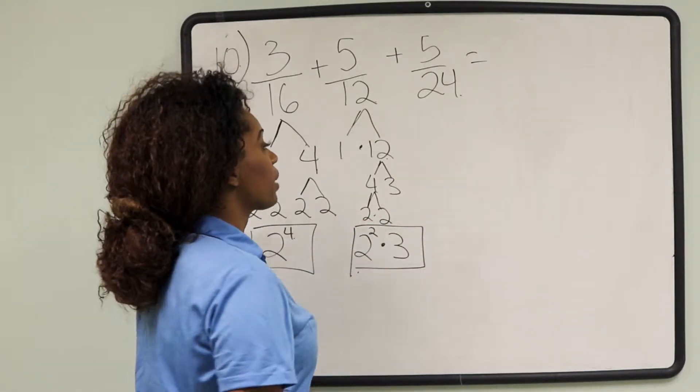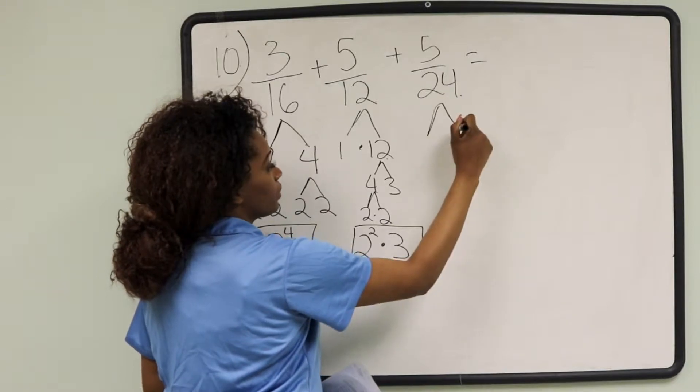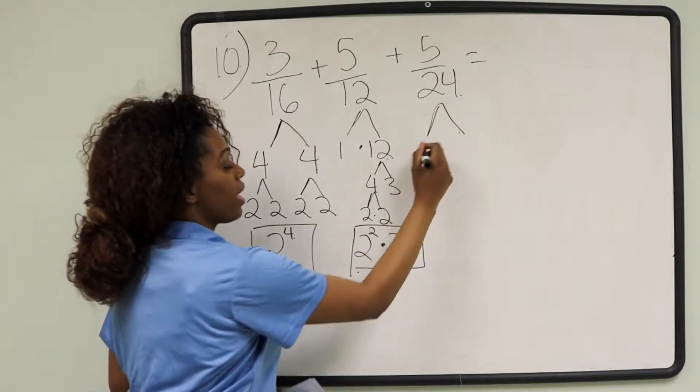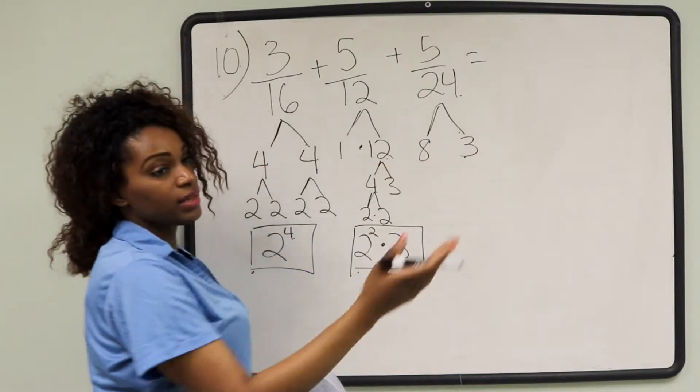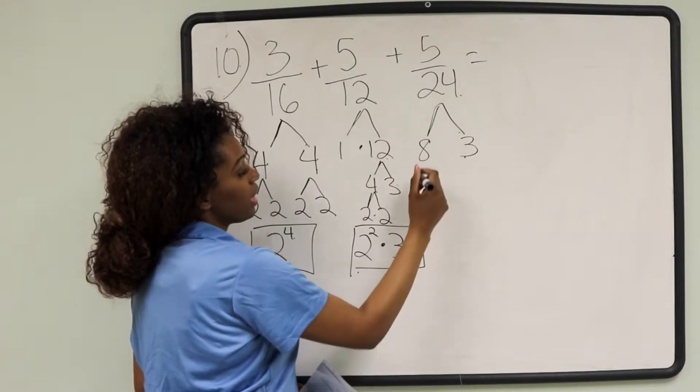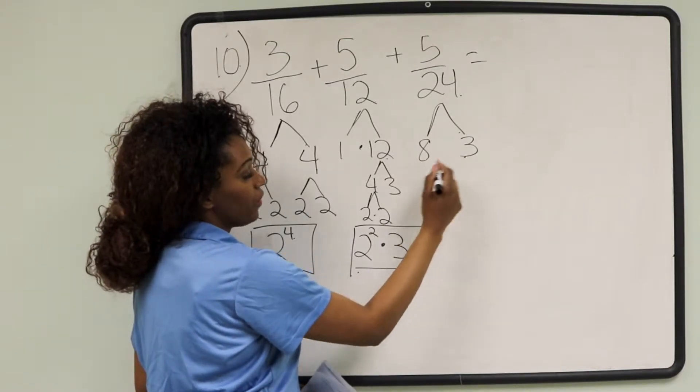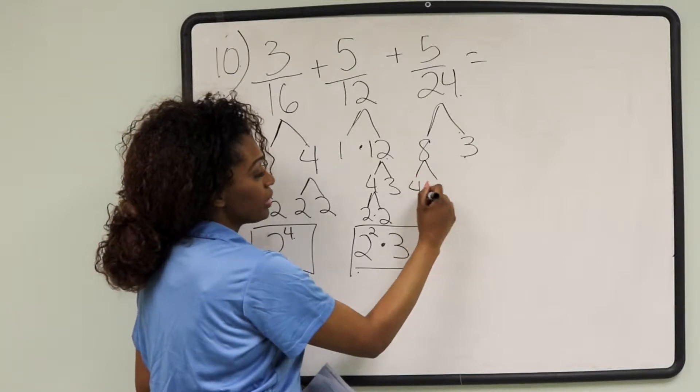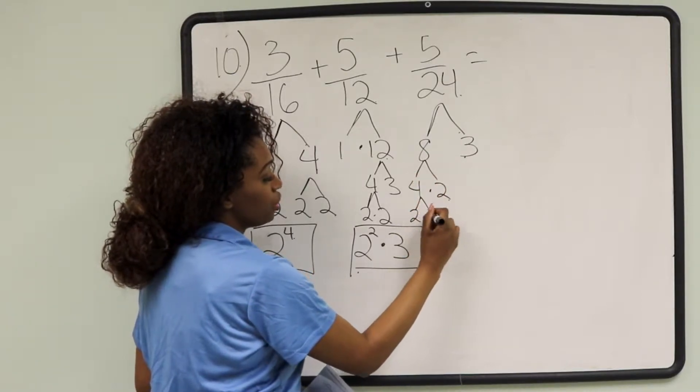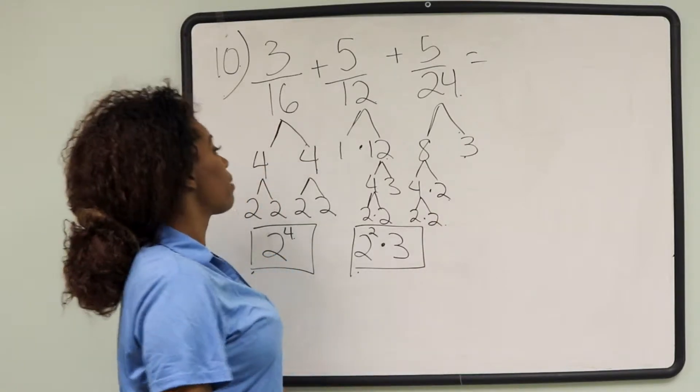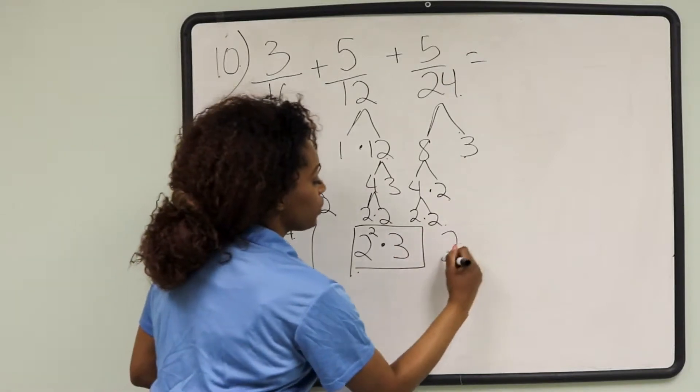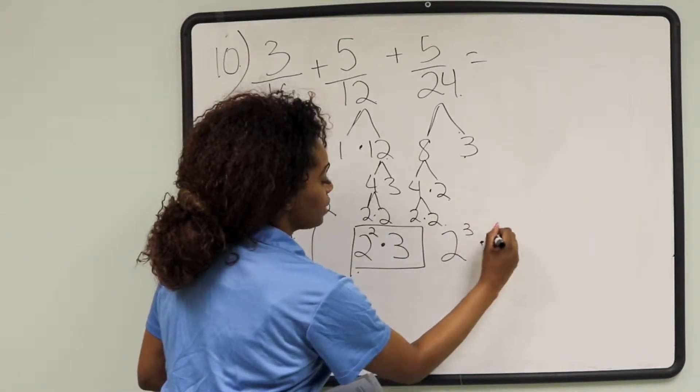For 24, we're going to break it down. Factors of 24 I know are 8 and 3, or you can start with 6 and 4 as well and break it down from there. 3 we can't break down any further, but 8 we can break down into 4 times 2, and then 4 can be broken down again into 2 times 2. So the prime factors of 24 would be 2 to the 3rd times 3.